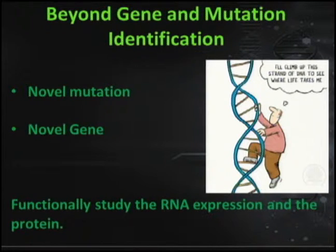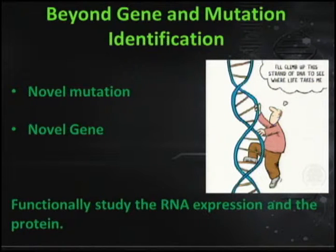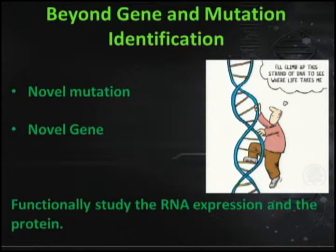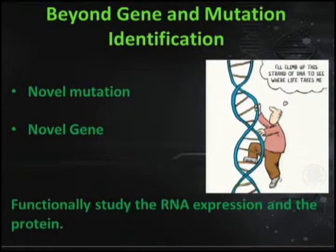Linking to my colleague's next presentation: what do we do with the genetic information we have — what's beyond gene and mutation identification? Once we identify a novel mutation, we can study the effect of that mutation on the protein and how it causes the disease. If we identify a novel case with a novel gene, we can study the role of that gene in disease pathogenicity, applying functional studies like RNA expression and protein work, which may also help in developing therapeutic protocols for patients.